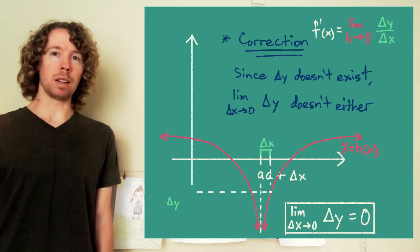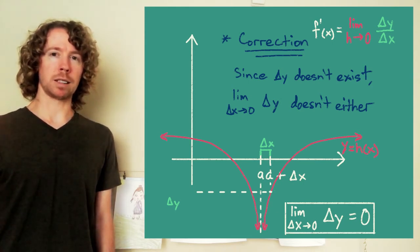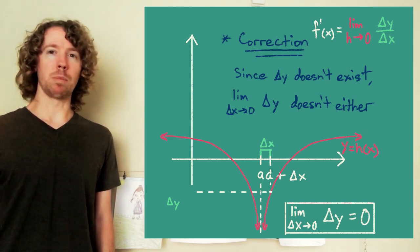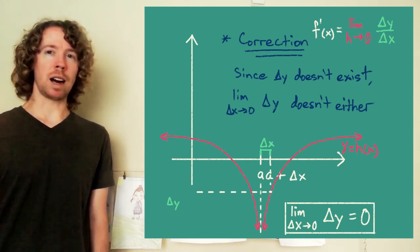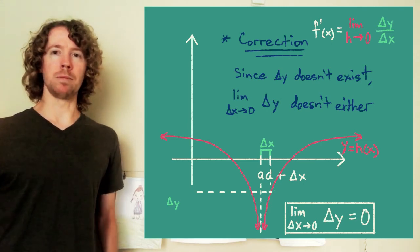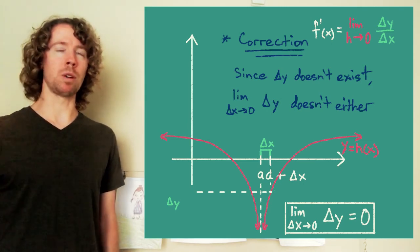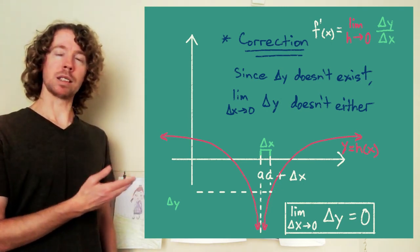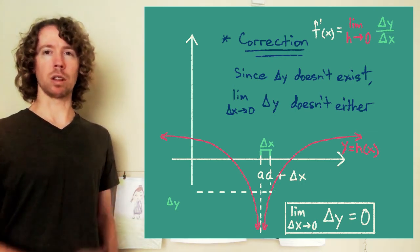So the limit of delta y over delta x as delta x shrinks to zero is definitely either positive infinity or negative infinity. It is not just some constant number that gives us a slope.